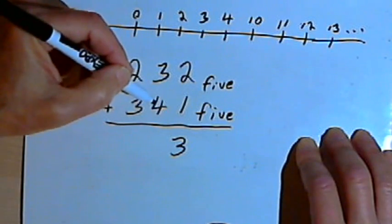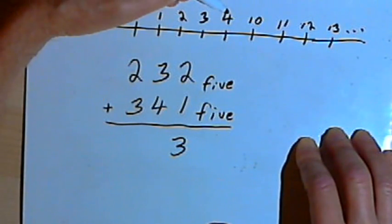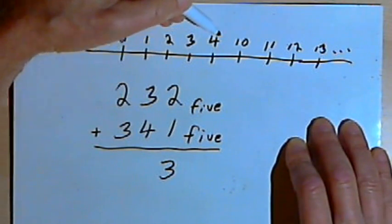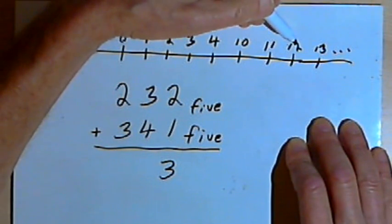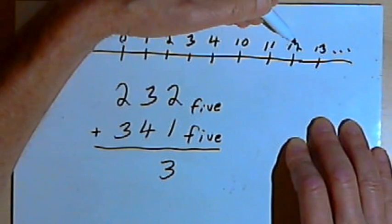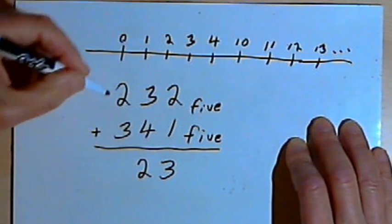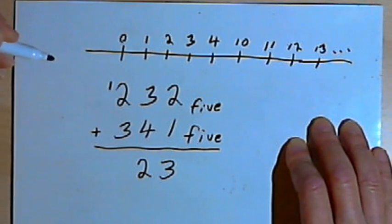Now I've got to add 3 and a 4. So I'll go to the larger of those numbers. I'll go to the 4 on the number line. And I'll count up three spaces: 1, 2, 3. That gets me to the number 12. So I'll write the 2 down and carry a 1 into the next column.